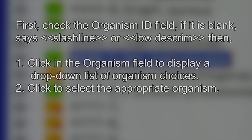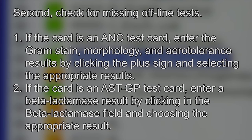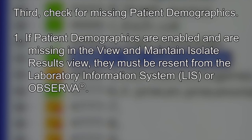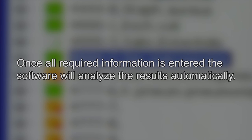In summary, qualified isolates are missing required information. In order to resolve qualified isolates, the required information must be entered. First, check the Organism ID field — if it's blank, says Slash Line, or says Low Discrim, click in the organism field to display a drop-down list of organism choices and click to select the appropriate organism. Second, check for missing offline tests. If the card is an ANC test card, enter the gram stain, morphology, and arrow tolerance results by clicking the plus sign and selecting the appropriate results. If the card is an AST GP card, enter the beta-lactamase result by clicking in the beta-lactamase field and choosing the appropriate result. Third, check for missing patient demographics — if patient demographics are enabled and are missing, they must be resent from the LIS or Observa. Once all required information is entered, the software will analyze the results automatically.